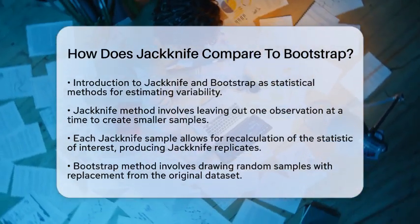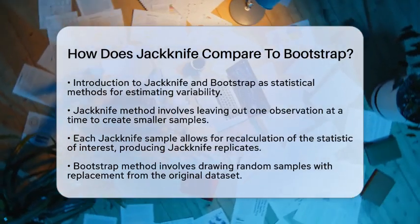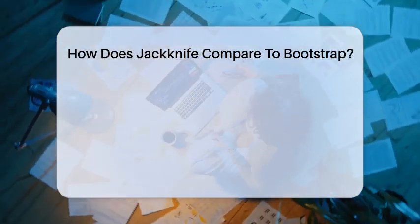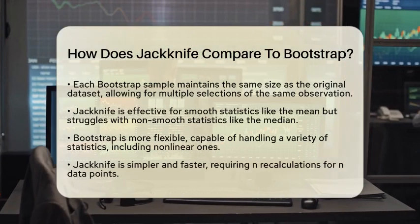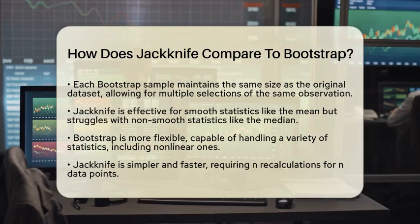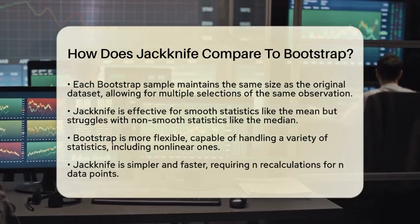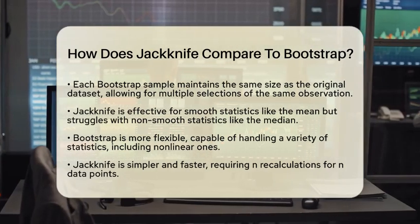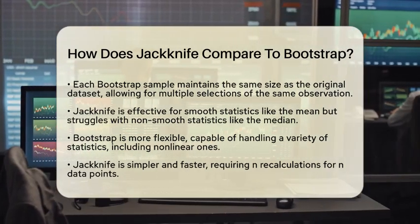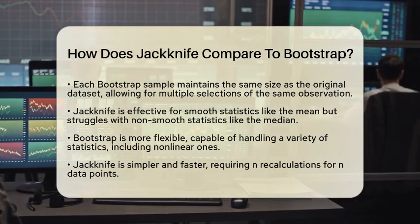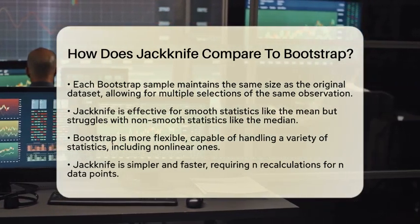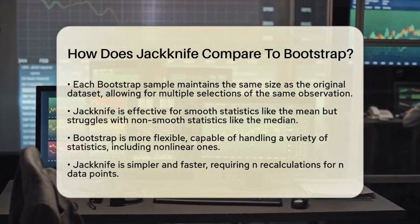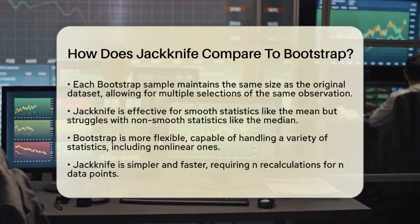On the other hand, the Bootstrap method takes a different route. It involves drawing random samples with replacement from the original data. This means you can select the same observation multiple times in a single sample. Each Bootstrap sample is the same size as the original dataset, and you recalculate the statistic for each sample. This process generates a distribution of Bootstrap replicates that can be used to estimate standard errors, bias, and confidence intervals.